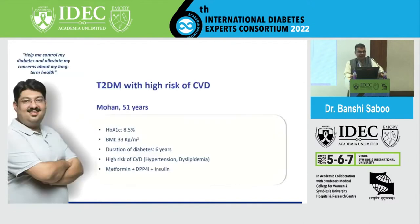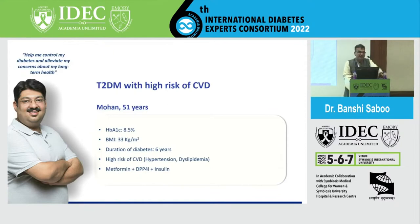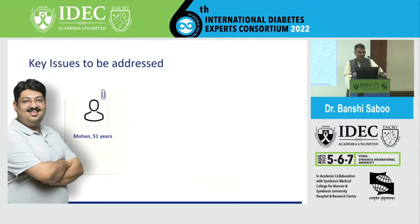The next case is a routine patient with multiple cardiovascular risk factors: type 2 diabetes with high risk of cardiovascular disease, A1c of 8.5, BMI of 33, duration of diabetes 6 years, with hypertension, dyslipidemia, and significant obesity. This patient is already on metformin, DPP4, tried other oral anti-diabetic agents, and was put on insulin, but still A1c is not getting good control.